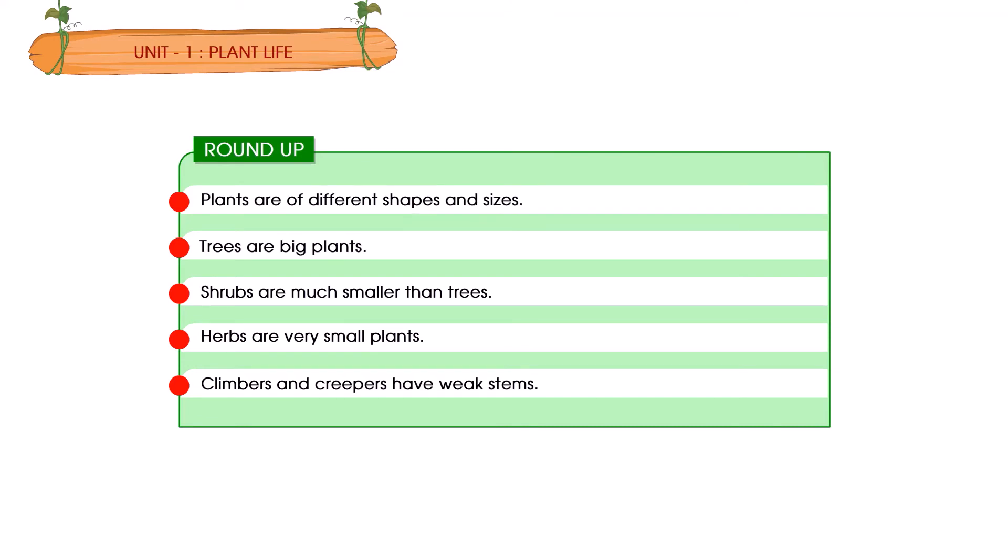Shrubs are much smaller than trees. Herbs are very small plants. Climbers and creepers have weak stems.